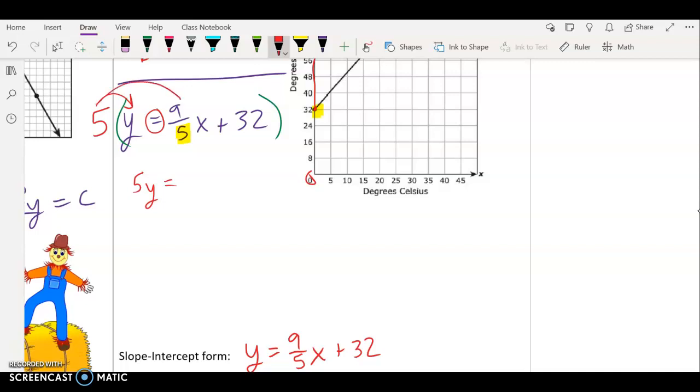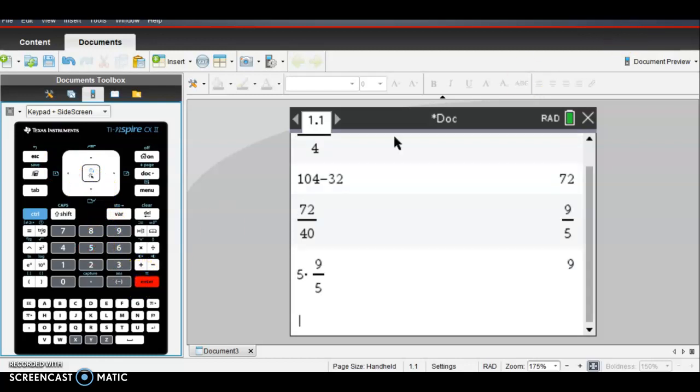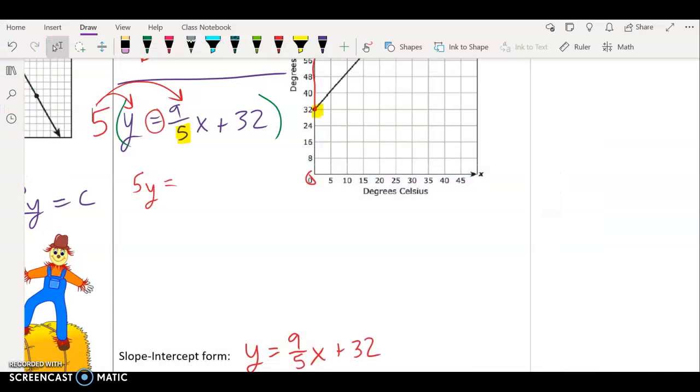So we're multiplying both sides by five. Five times y is five y. Don't forget to bring down the equal sign. Now five times nine fifths - let's use our handy dandy calculator again. Five times, oops that's not times, times, and then make a fraction, control divide, nine fifths. And what do we get? Nine. Wonderful, very easy. Remember the goal was to get a whole number because our answer cannot have fractions in it. And don't forget that the x is with it.